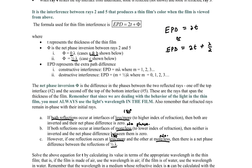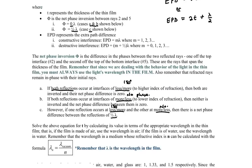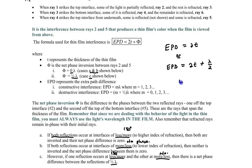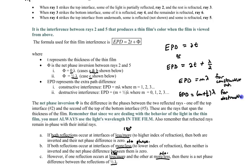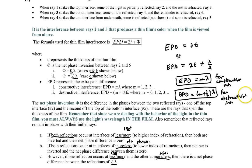EPD is the extra path difference. For constructive interference, EPD = mλ; for destructive interference, EPD = (m + ½)λ. You must read the question carefully: if you want a particular frequency to appear bright, use constructive interference; if you want to eliminate a frequency — say UV on a lens coating — use destructive interference.